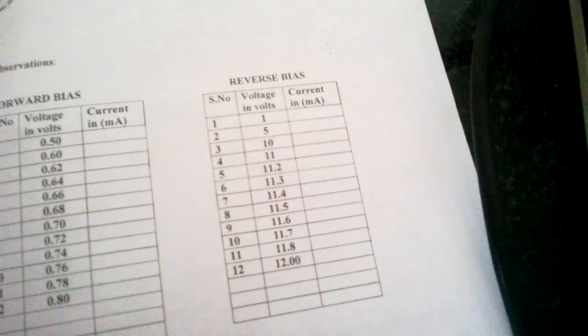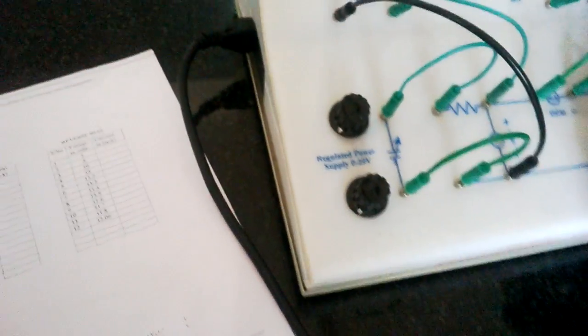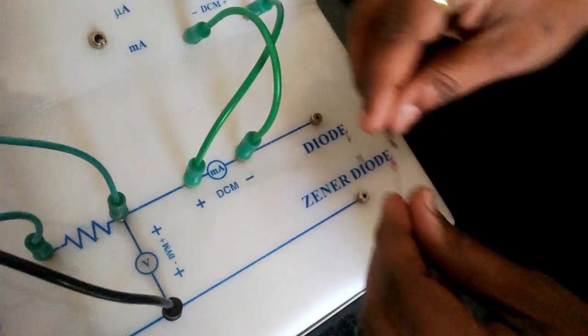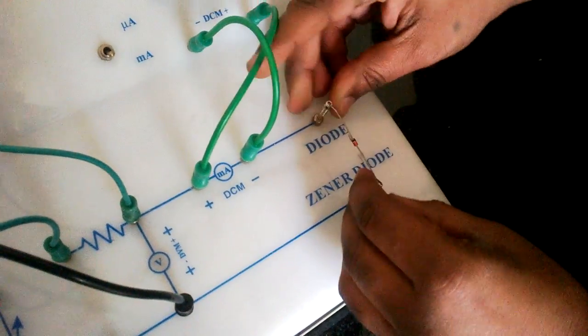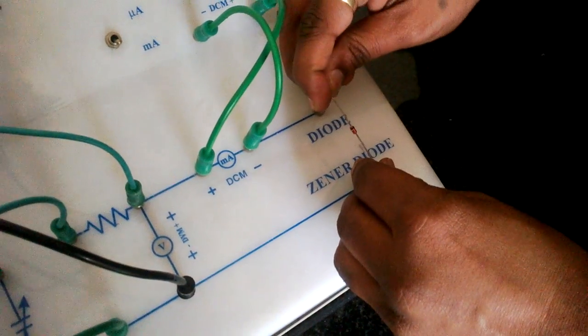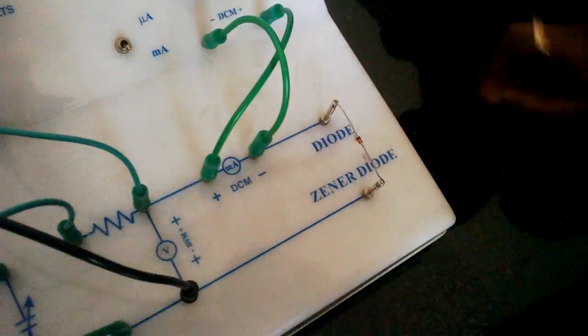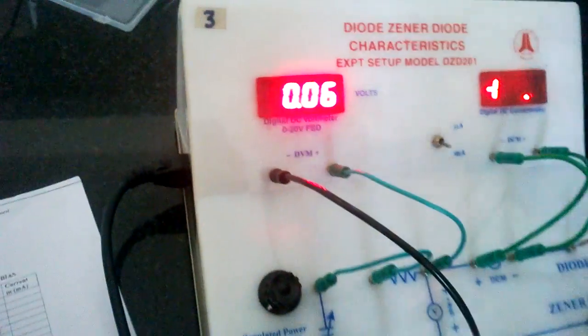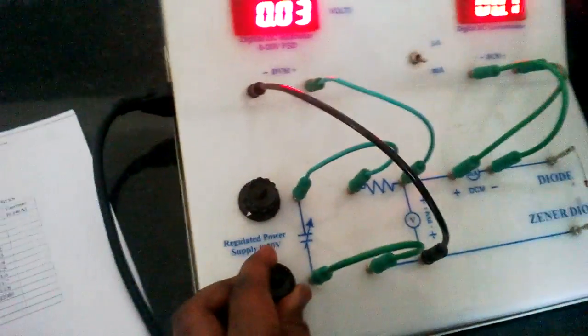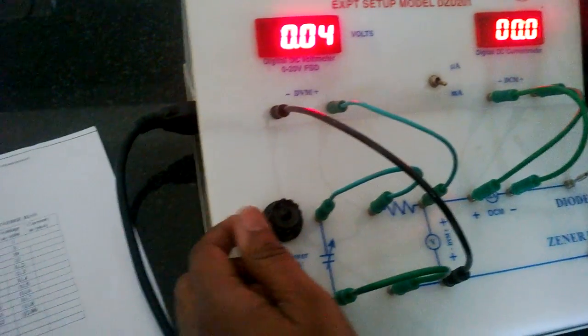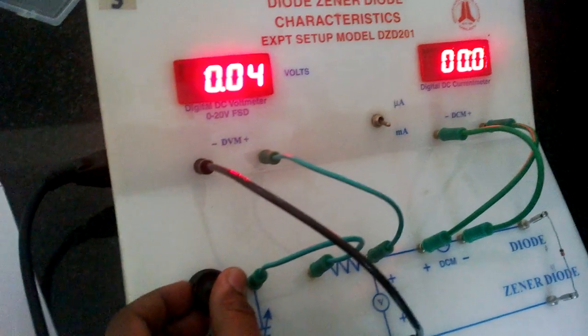Next, we will go for reverse bias. Just minimize all the voltages and switch it off. And interchange this diode and plug it back. Switch it on. Now, repeat the same procedure how we have done for the forward bias. Increase this voltage.